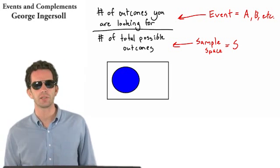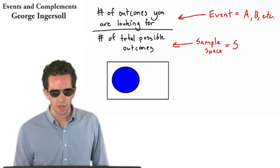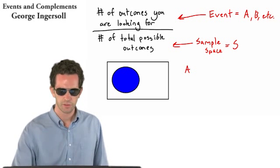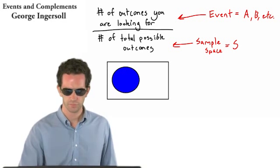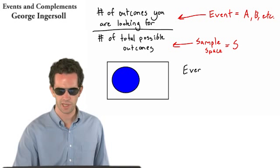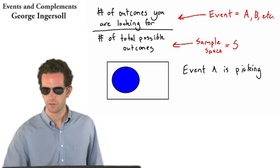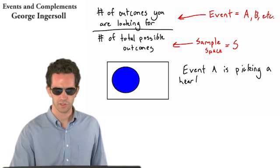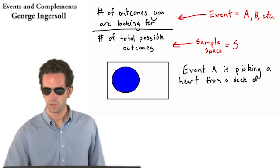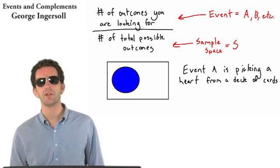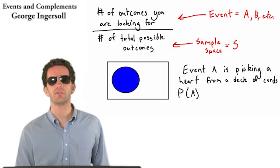So everything in blue, let's actually use an example here. Suppose we are looking, we'll go back to the example of a deck of cards. Suppose event A, event A is picking a heart from a deck of 52 cards. If we want to know the probability of that event happening, we call this P of A, the probability of event A happening.